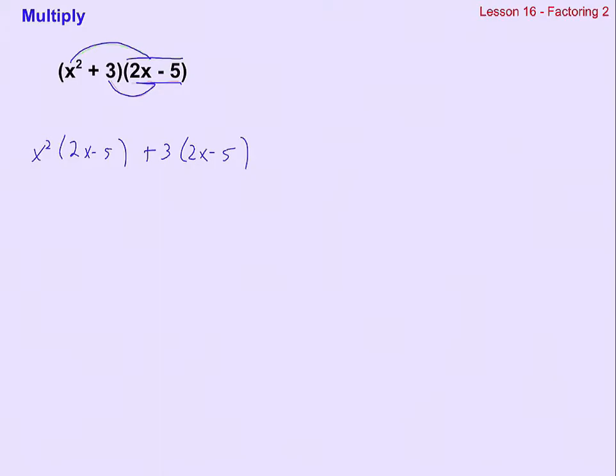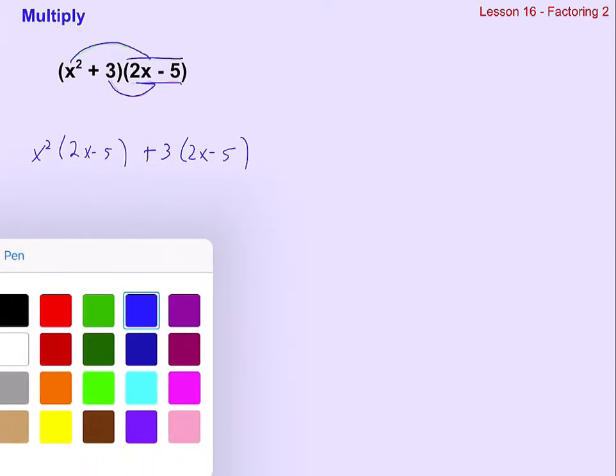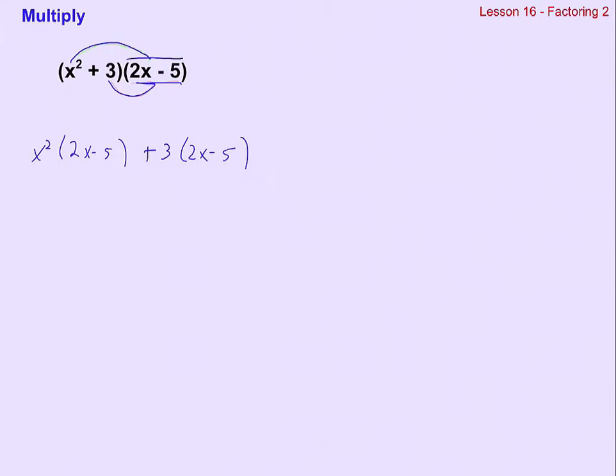If you think about distributing that way, then you'll see the next step, which would be to distribute the x squared to its other factor, 2x to the third. So we're multiplying x squared times 2x minus 5x squared, and distributing the 3 to the factor that it's being multiplied by, 6x minus 15.